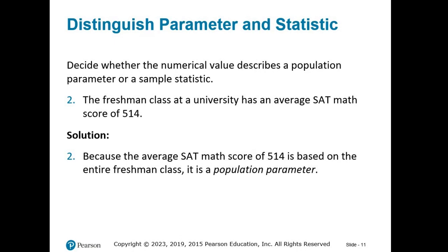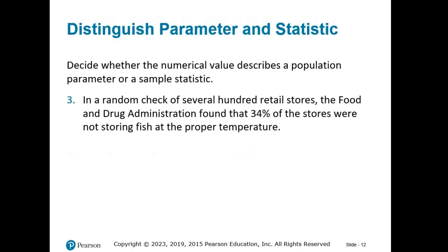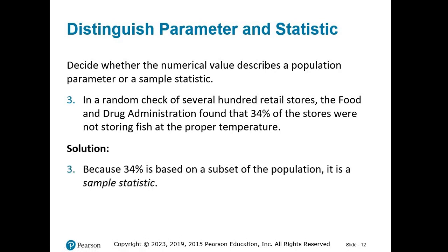In a random check of several hundred retail stores, the Food and Drug Administration found that 34% of the stores were not storing fish at the proper temperature. Pause the video and decide if the number given is a population parameter or a sample statistic. Just like in the first example, there are clearly more than several hundred retail stores in the country, so the study is using a subset or sample, meaning 34% is a sample statistic.